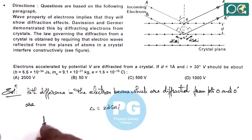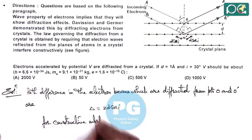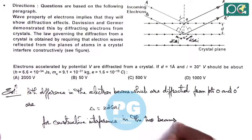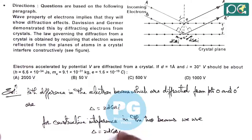And we can say for constructive interference in the two beams which are considered as waves, we can write path difference is 2D cos I. And this should be equal to N lambda where N belongs to set of integers. That is the condition for constructive interference.